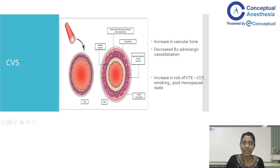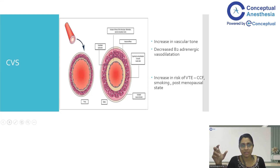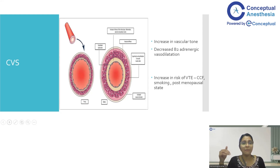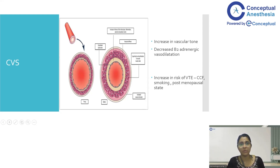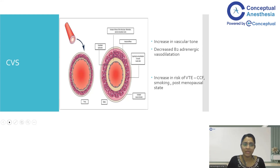Coming to the changes in the cardiovascular system: compared to a normal adult, the elderly patient will have increased vascular tone and decreased sensitivity towards beta-2 receptors. Since there is increased vascular stiffness, blood cannot move with the same rheology as in an adult, and blood stasis can happen, predisposing the patient to venous thromboembolism. Any elderly patient who has been smoking or is immobile is at additional risk. Patients who are postmenopausal and on estrogen therapy are also more prone for venous thromboembolism.